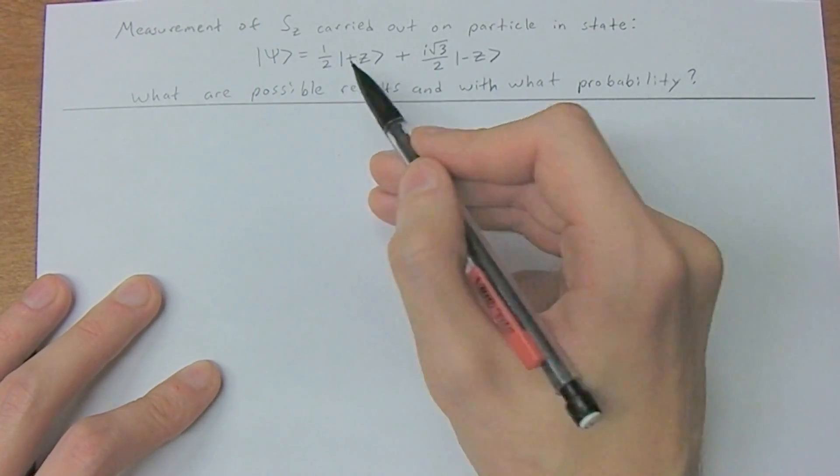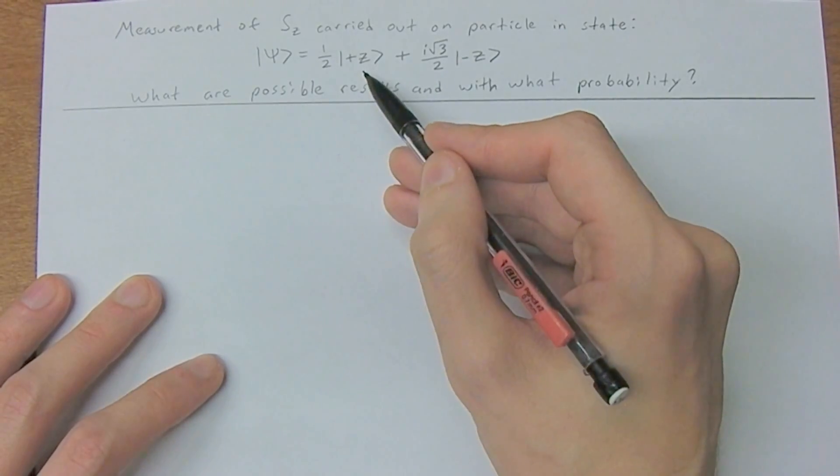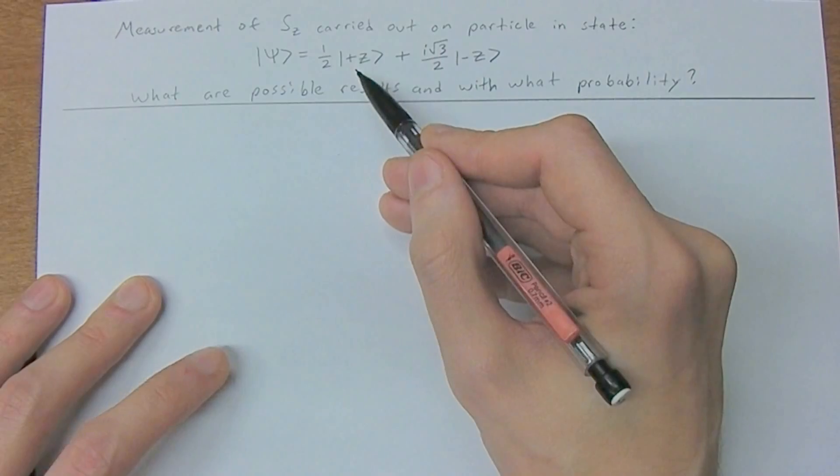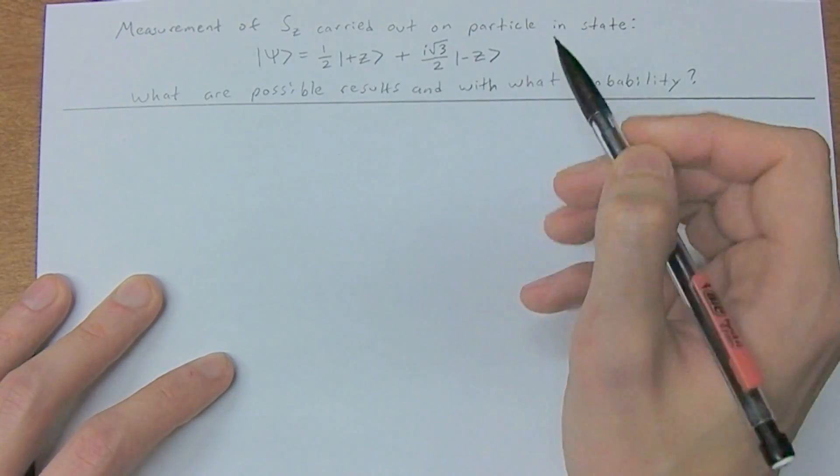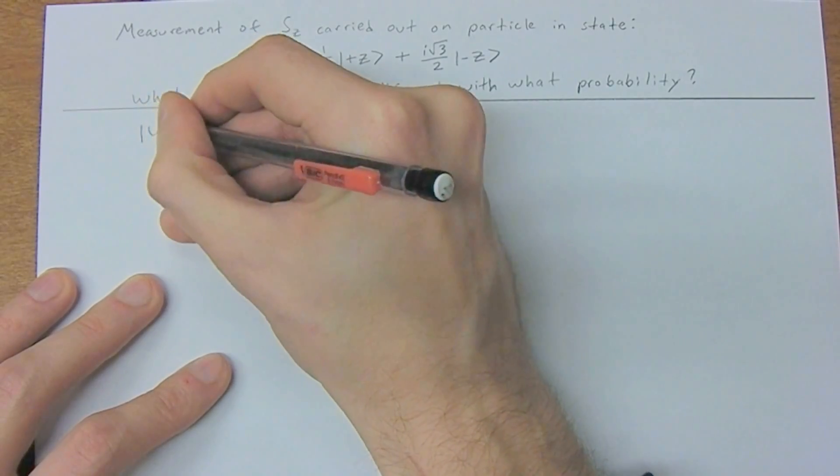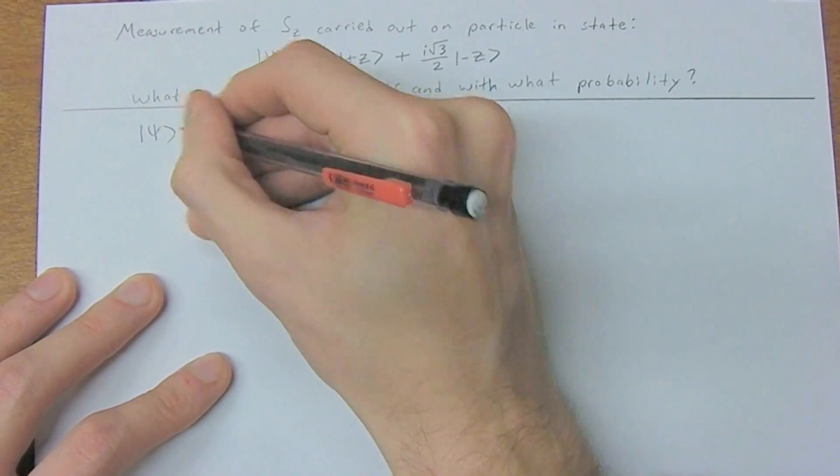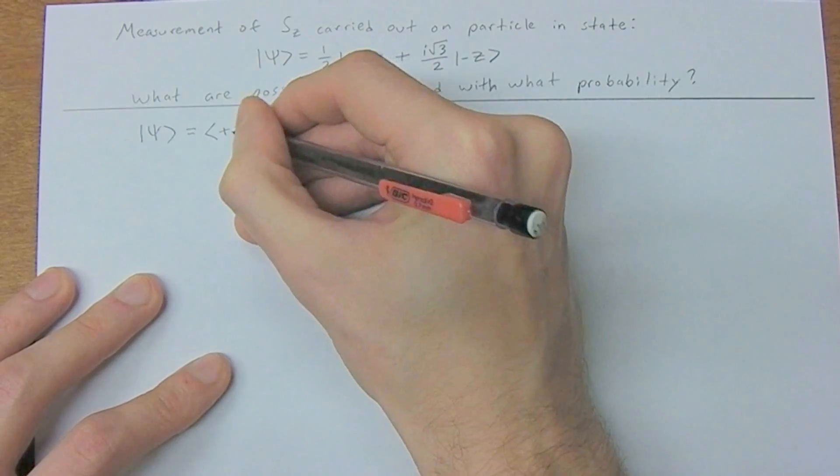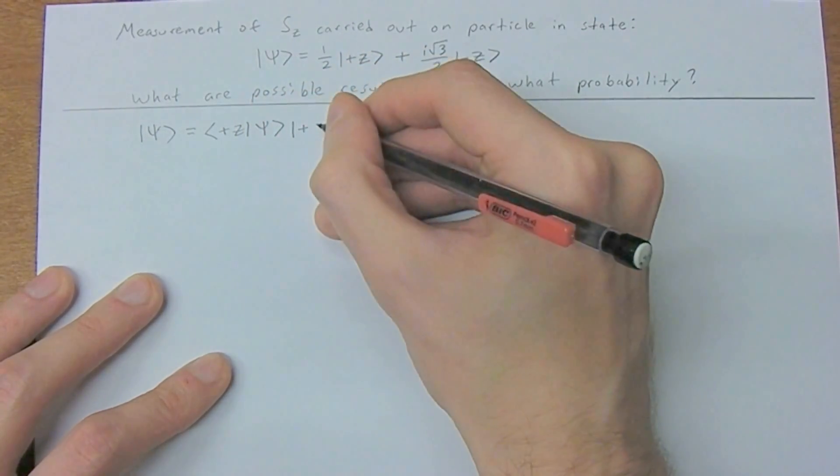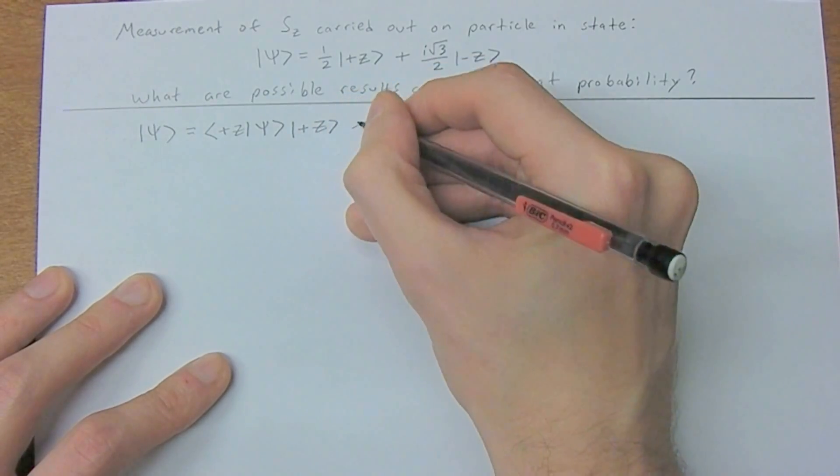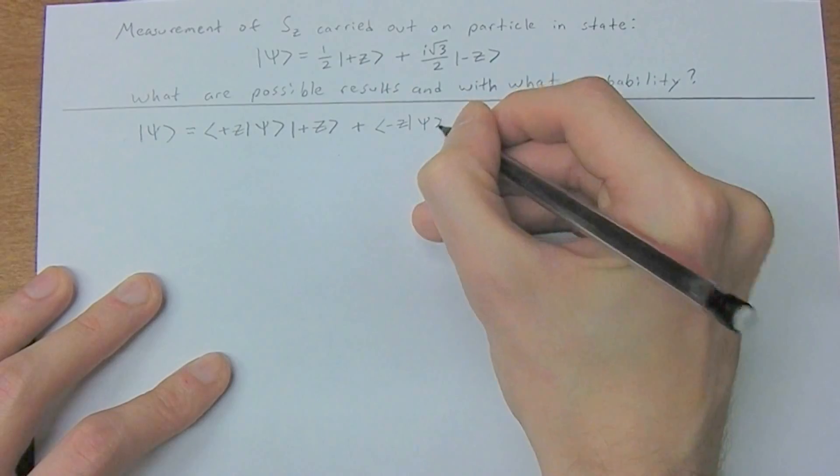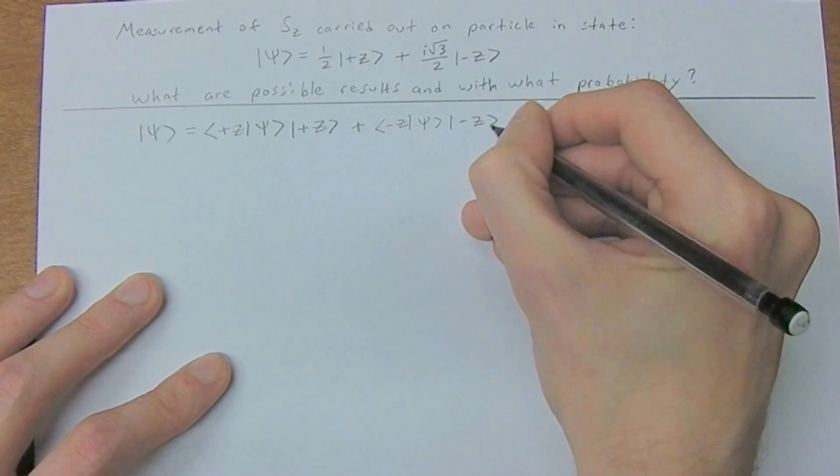So in front of our basis states here, I want you to think similar to XYZ. We have the basis states plus z and negative z. We can actually write this another way. Our ket of psi is equal to plus z acting on psi times the basis state plus z plus negative z psi negative z.